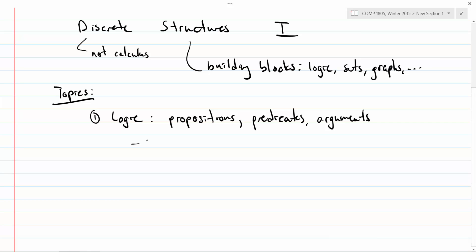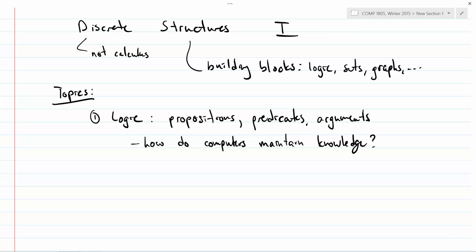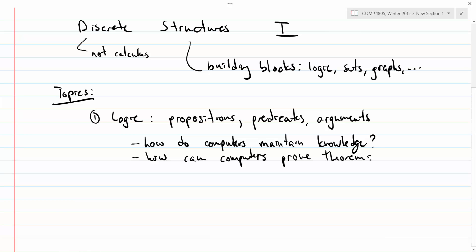In knowledge representation, we ask how computers maintain knowledge. Computers might need to know some fact or set of facts and use those facts to derive other facts. How does the computer store that? We know how a computer stores a number — it's a bunch of ones and zeros — and that's essentially how a computer stores anything. But how do we encode facts into those ones and zeros? Computers can also be used to prove theorems, so we'll see the building blocks of how they do it.